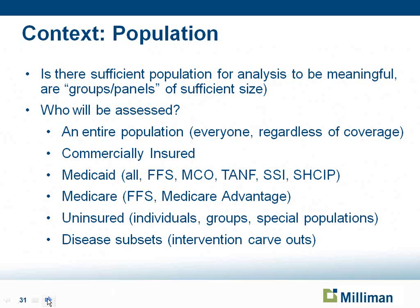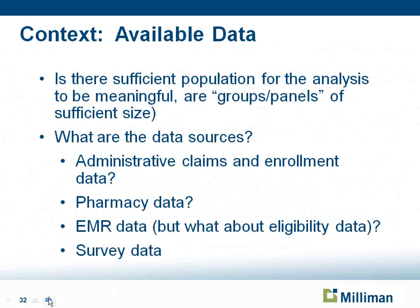The other contextual question is the population. Do you have sufficient population — 75 people on the panel, or 7,500, or 750,000? Will you be assessing everyone regardless of coverage? Are they commercially insured, Medicaid, a mix — Medicaid and uninsured, or Medicaid and Medicare dually eligible? Are there disease subsets you want to look at? Ask all these questions before you choose the model, because different models will fit populations differently.